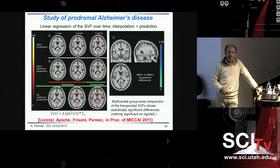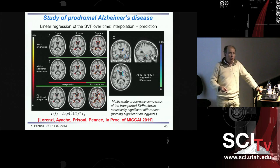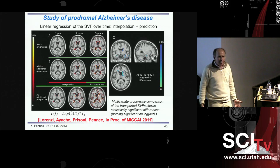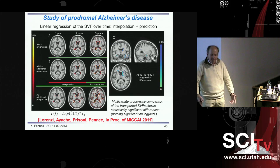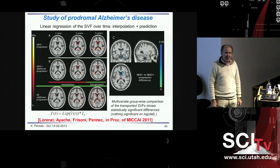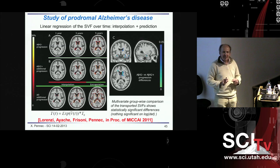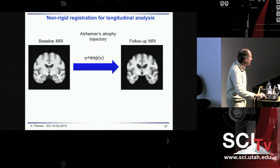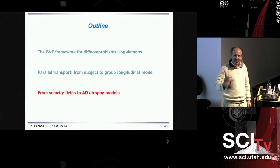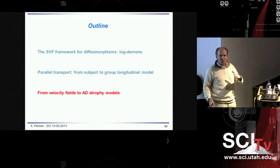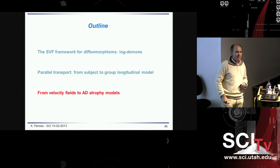A follow-up idea is to decompose into what's normal and what's not along the normal component. In very high dimensions, statistically the angle between two vectors is 90 degrees — so the angle is not interesting. What is more interesting is what you should add. The idea is more to decompose into what's normal aging and what's not, along the normal component. That's what I will show at the end.